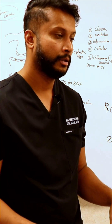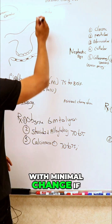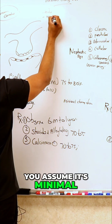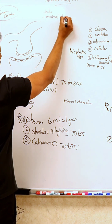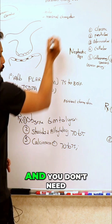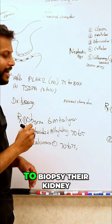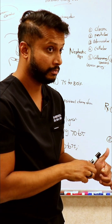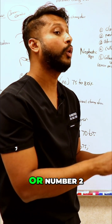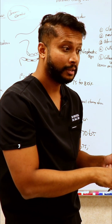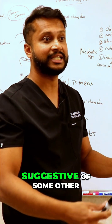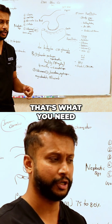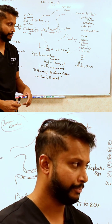If a kid presents with nephrotic syndrome, you assume it's minimal change disease and you don't need to biopsy their kidney — unless they one, failed treatment, or number two, they have other features suggestive of some other secondary etiology. That's what you need to know.